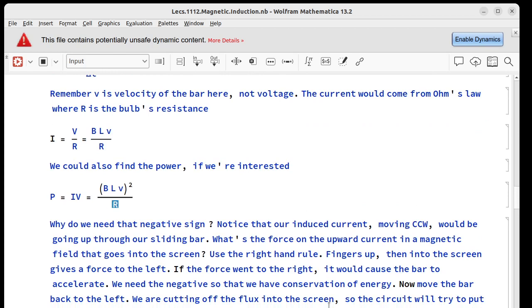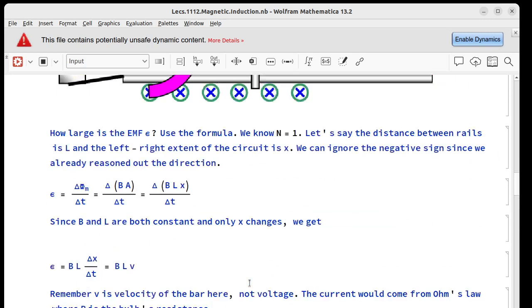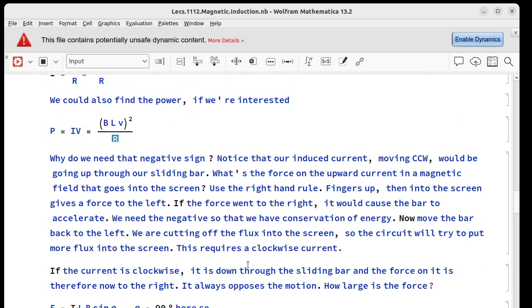Now we can figure out if we move the bar back to the left, what happens? Well, now we're starting to cut off in-the-page flux, so the circuit tries to produce in-the-page flux. Point the thumb of your right hand into the page and you'll see your fingers curl clockwise. So if you move the bar the other way, the current goes the other way. If the current moves clockwise, it's moving down through the bar, and the force on it will be to the right.